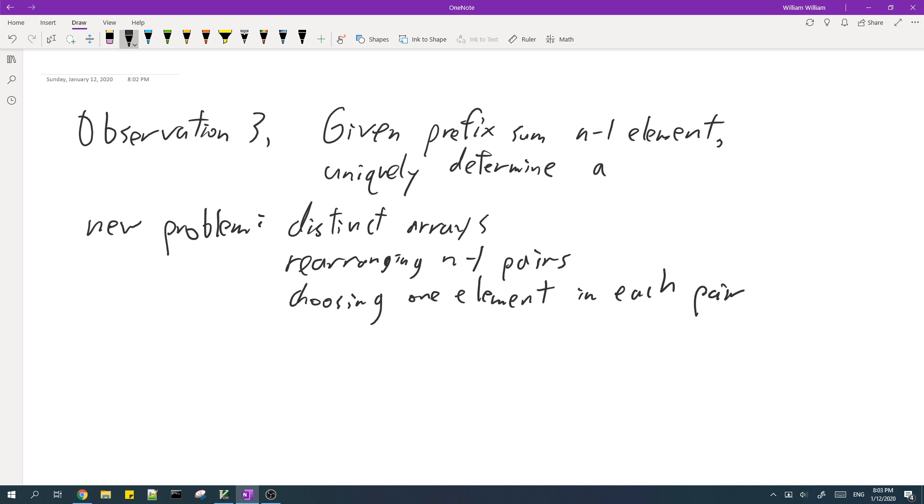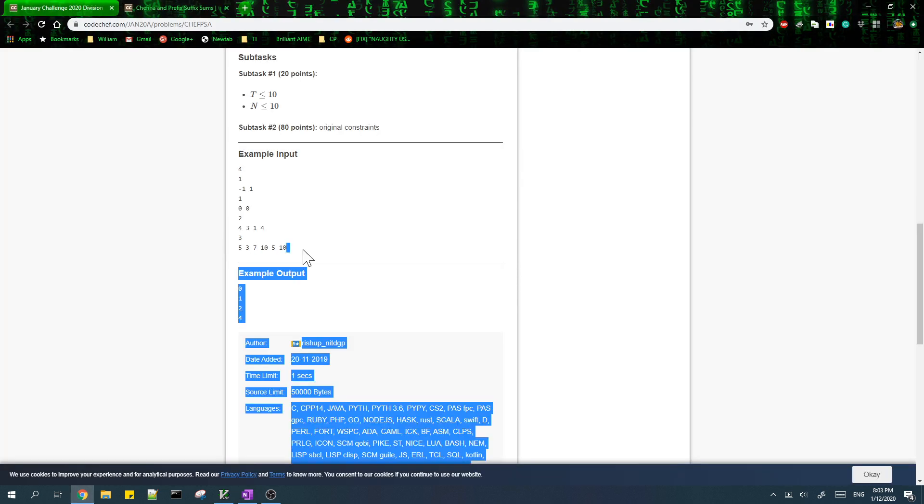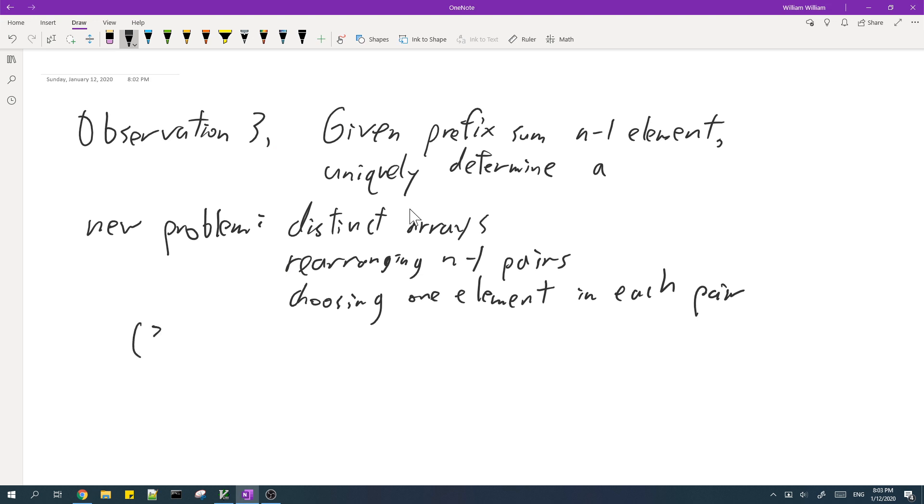So for example, in the fourth test case here, we have the pairs 3-7 and 5-5. So the number of arrays we can obtain using these two pairs is calculated as follows.